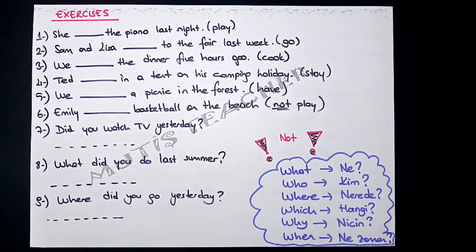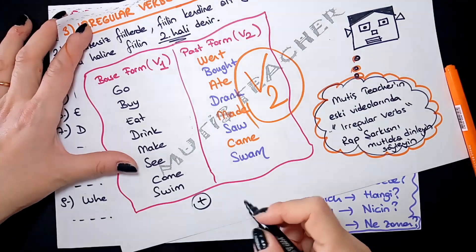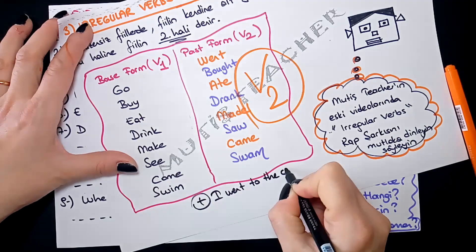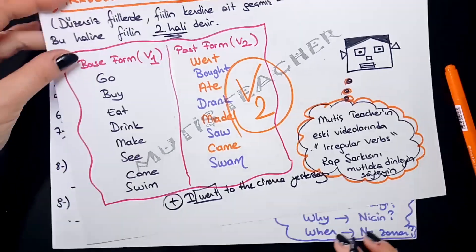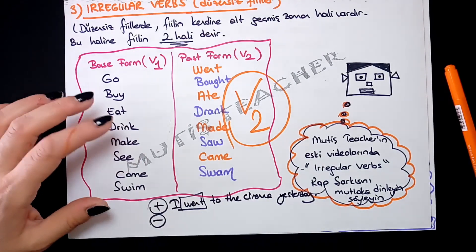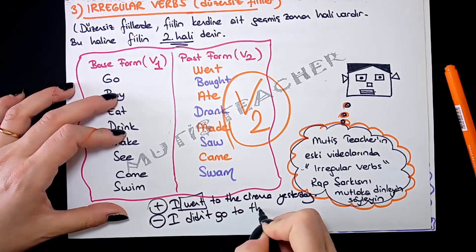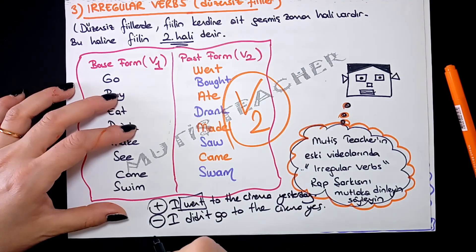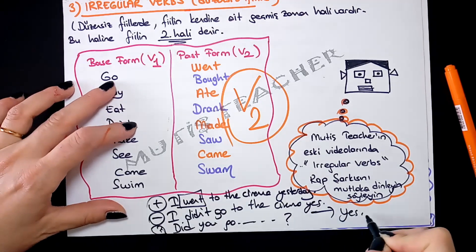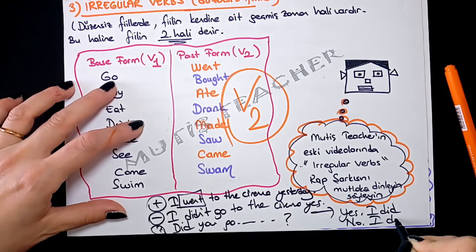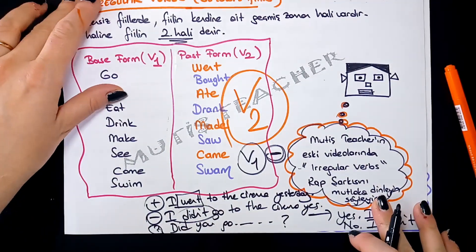Düzenli fiillerdeki kural düzensizler için de geçerli. Örnek: I went to the cinema yesterday (dün sinemaya gittim — olumlu). Olumsuzu: I didn't go to the cinema yesterday — didn't girince fiil birinci haline döner, went değil go olur. Soru: Did you go to the cinema? Gittiysen yes, I did; gitmediysen no, I didn't. Olumsuzda her zaman fiil birinci hale döner.